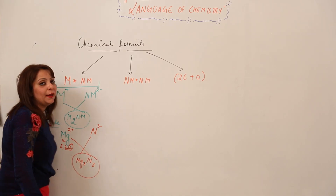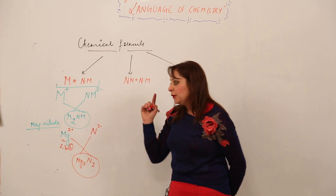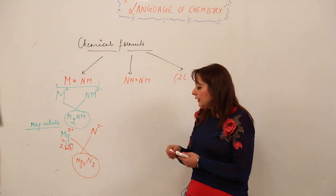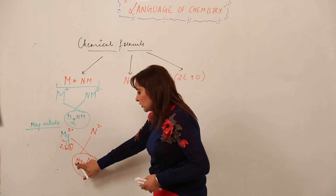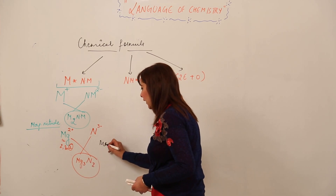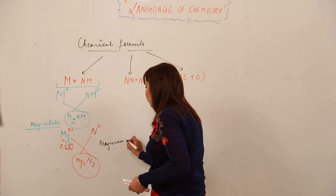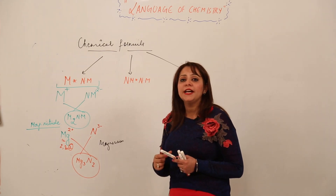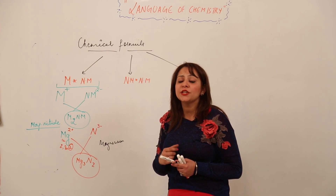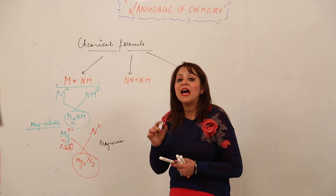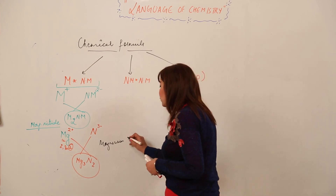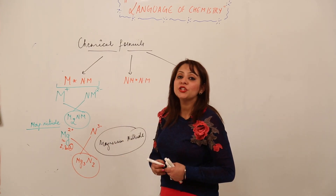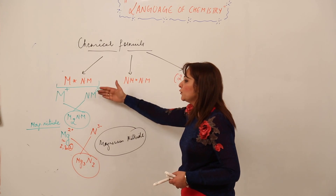So the formula for magnesium nitride is Mg₃N₂. One more thing to remember: when naming a compound formed of metal and non-metal, write the name of the metal first — so we write magnesium. For the non-metal, the suffix changes: nitrogen becomes nitride, replacing the ending with -ide. So this compound is not called magnesium nitrogen — it is called magnesium nitride. This is how you write chemical formulas for metal and non-metal compounds.